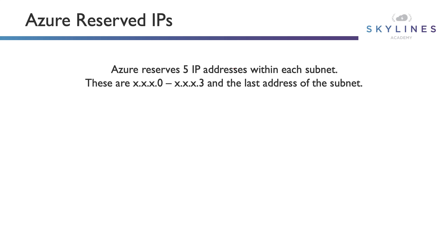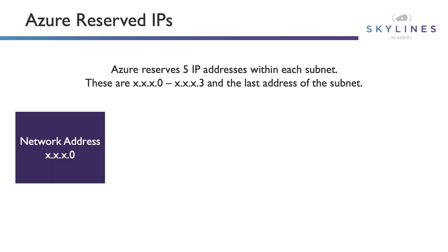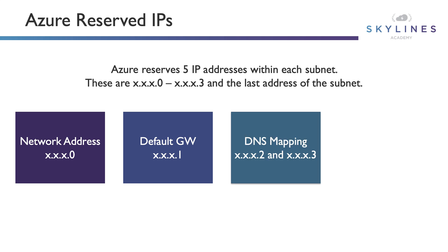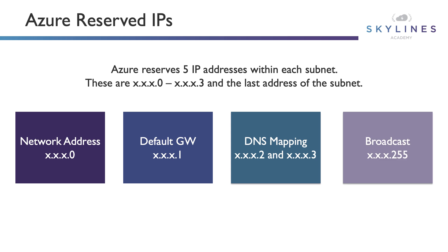Let's talk about Azure reserved IP addresses. This is really important because Azure reserves five IP addresses within each subnet. In a typical subnet, these are the .0 address through .3 as well as the last address of the subnet. They are allocated as follows: the network address — for example, 10.0.0.0 — indicating the network itself; the default gateway at 10.0.0.1; .2 and .3 reserved for DNS mapping services; and the .255 broadcast address for broadcasting traffic across the entire subnet. It's very important to know that you lose five addresses when you take these into consideration.